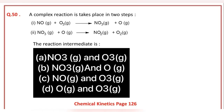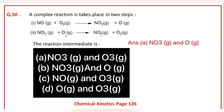A complex reaction takes place in two steps. Step one and step two are given and you are asked what the reaction intermediate is.